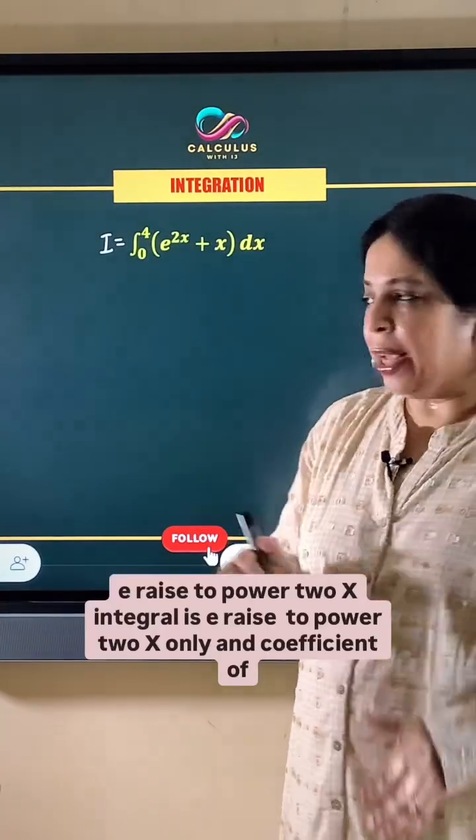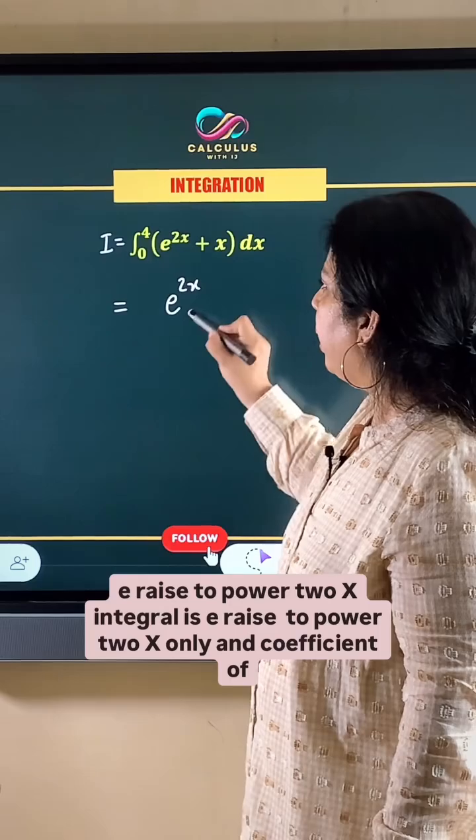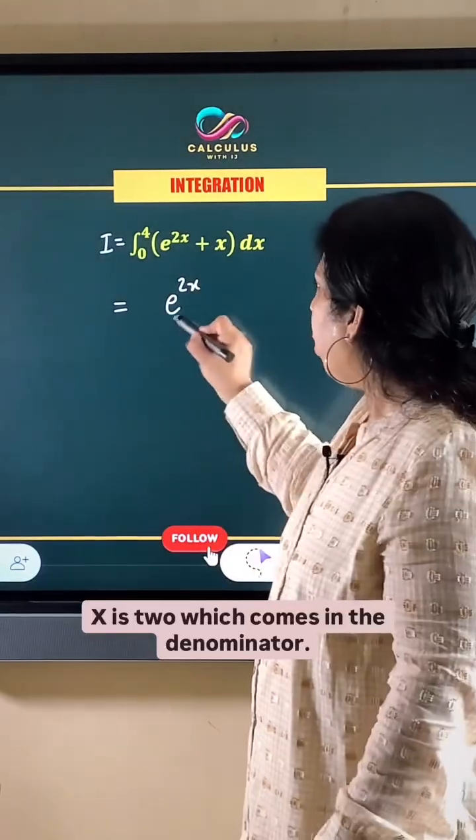So e raised to power 2x integral is e raised to power 2x only, and the coefficient of x is 2, which comes in the denominator.